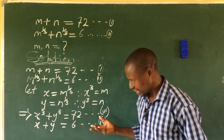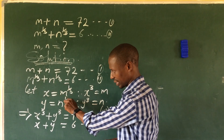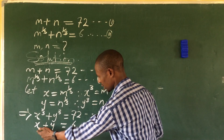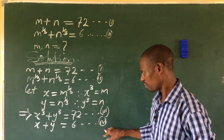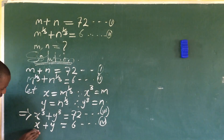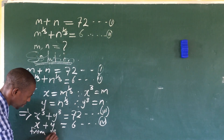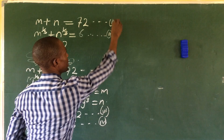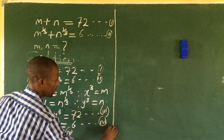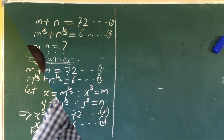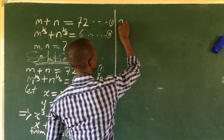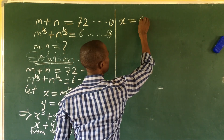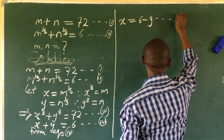We've now handled the radicals. From equation four, we make x the subject of the formula: x = 6 − y. We'll call this equation five.